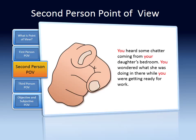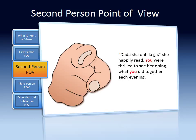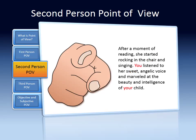You heard some chatter coming from your daughter's bedroom. You wondered what she was doing in there while you were getting ready for work. You were surprised to see that she had taken her book out of her bookcase, climbed into the white rocking chair, and was reading. She happily read. You were thrilled to see her doing what you did together each evening. After a moment of reading, she started rocking in the chair and singing. You listened to her sweet angelic voice and marveled at the beauty and intelligence of your child.